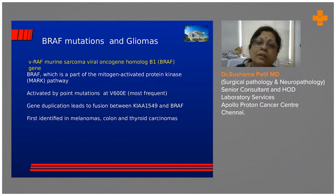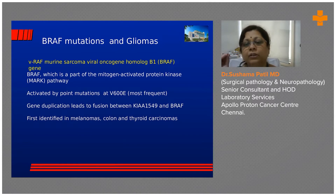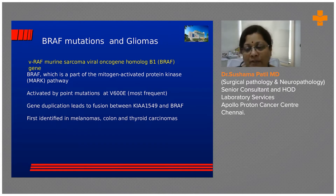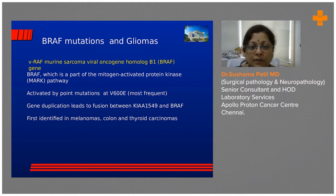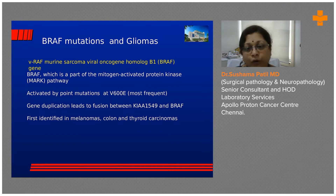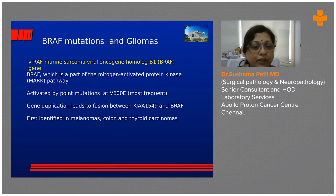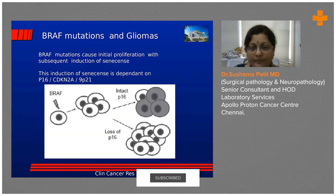We now know the genetic alterations seen in pilocytic astrocytoma — BRAF mutations and fusions. The BRAF gene can show many different abnormalities. In cerebellar pilocytic in children, you see BRAF fusions where a portion of the gene replicates and fuses with itself — there are many fusion partners identified. There are also BRAF point mutations, such as V600E, where valine is replaced by glutamic acid. In non-cerebellar locations — outside the cerebellum, brainstem, and hypothalamic region — you tend to see BRAF mutations rather than fusions, though both can occur in pilocytics.